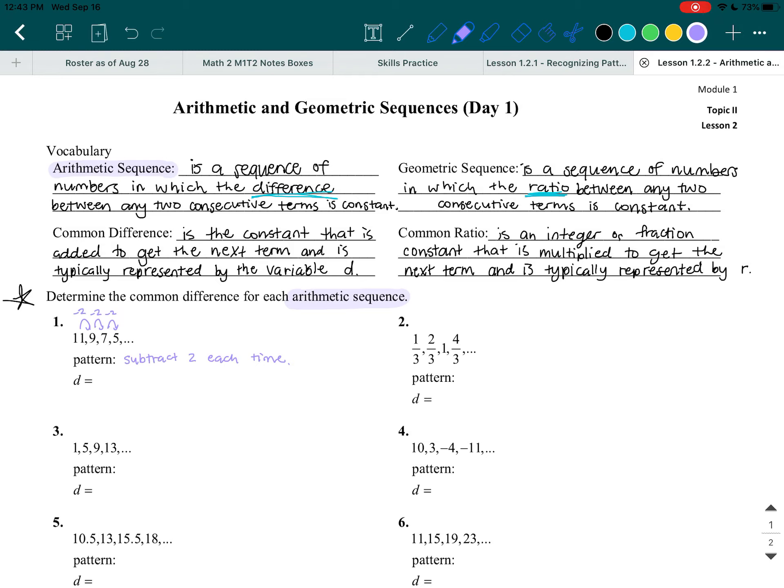And so in order to get the letter D, the common difference, we need to do a small calculation. So if we know it's an arithmetic sequence, then we know that we need to take the two numbers. Let's choose any two numbers. You can choose the first two, you can choose the second and the third, you can choose the third and the fourth. I'm just going to choose the first two. We have 11 and 9. Actually, no. Let's choose the second two.